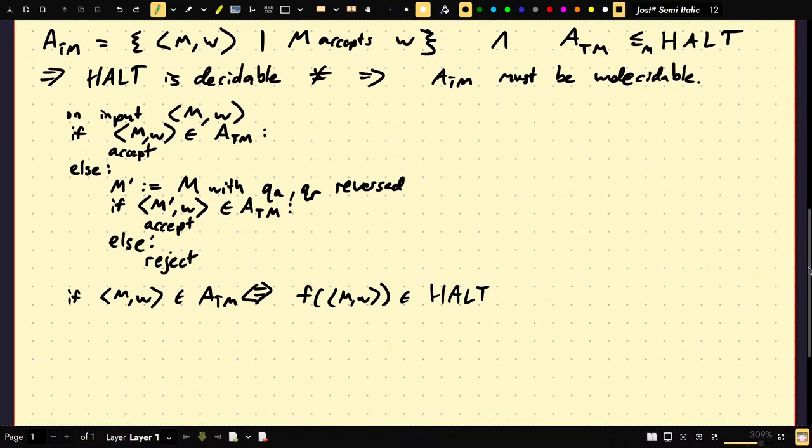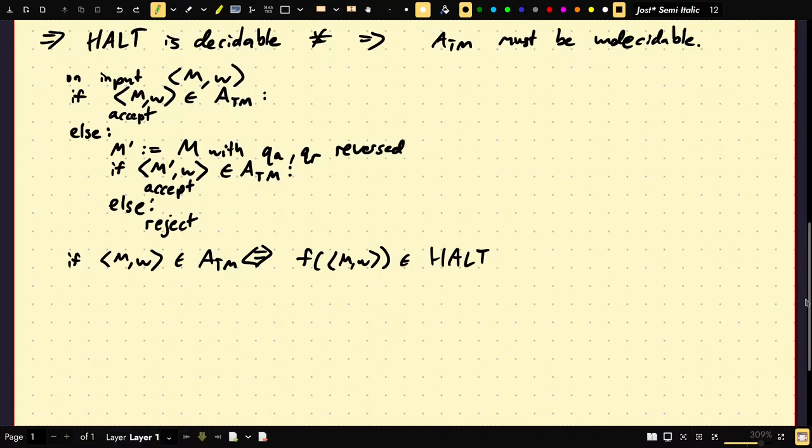So, we have done our first reduction. We have reduced the problem of determining if a machine halts from the determining if a machine can accept. And we know a machine, we cannot determine. And now we know that because HALT is undecidable, then so is ATM. We cannot determine if a machine accepts or rejects. So, we went from ATM to halting.